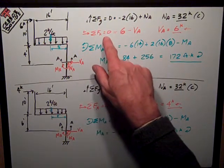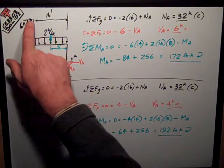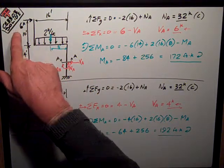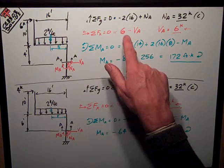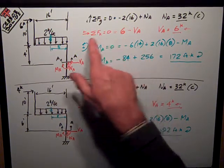Sum of forces in the x direction is equal to zero, positive to the right. I have my six kip force up there. That's all I've got externally applied in the x direction.